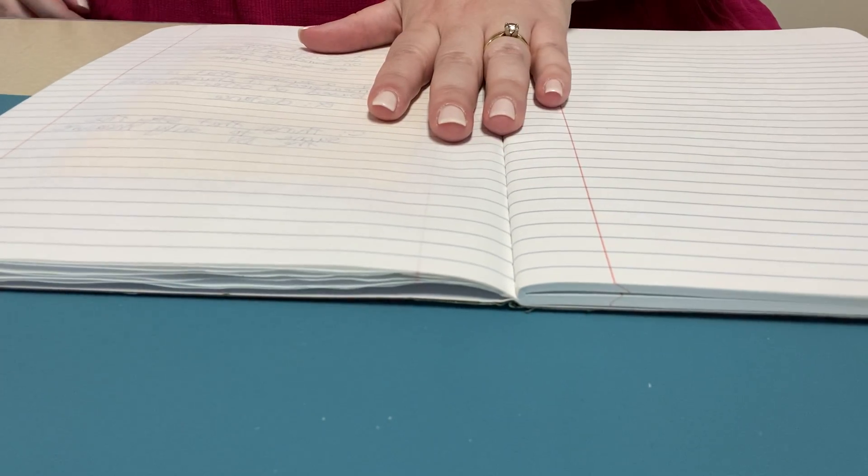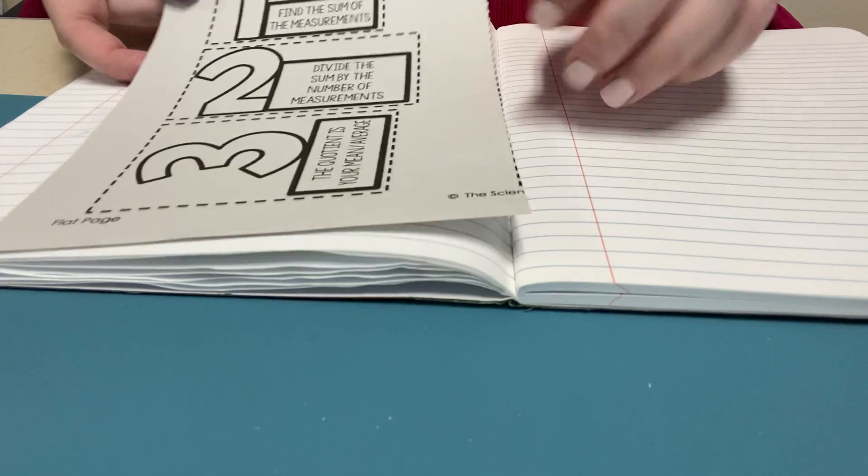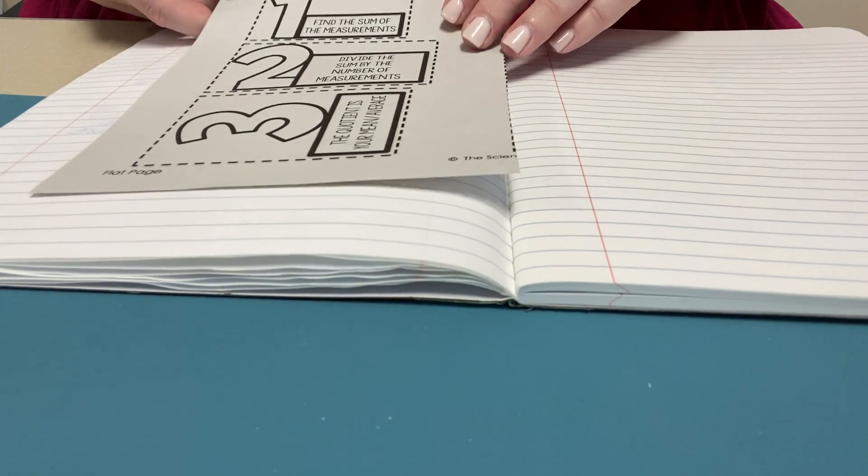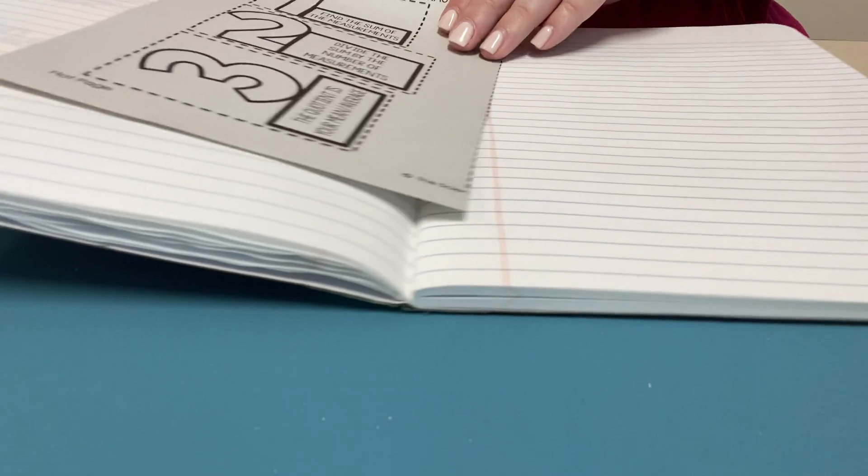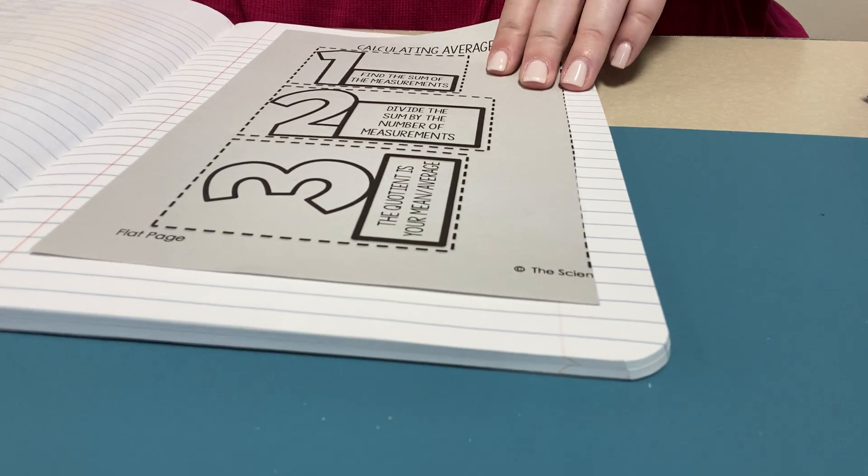Hello there. Today we will be working on pages 14 and 15 in our interactive science notebook. We're going to be working on creating averages, which is actually page 15.